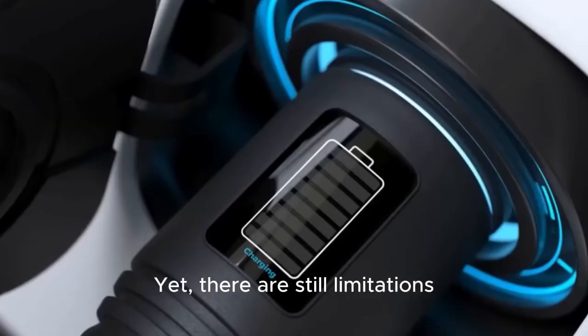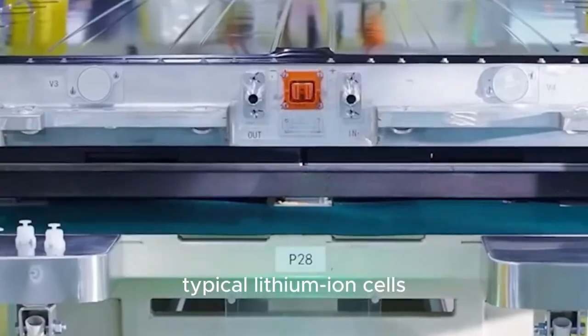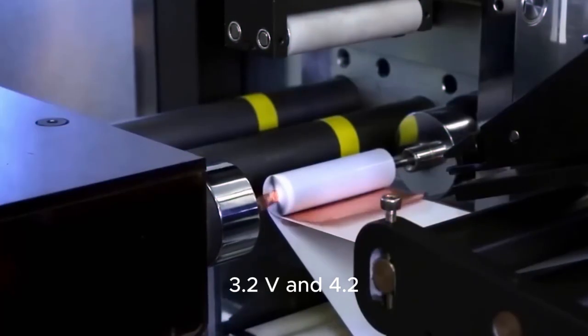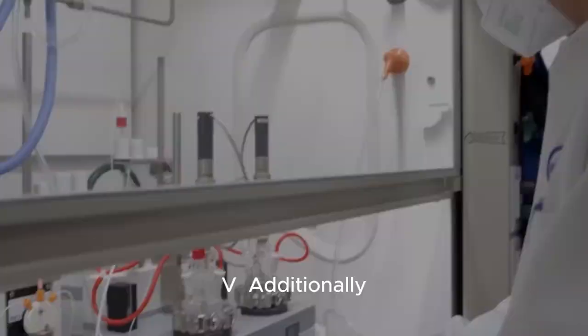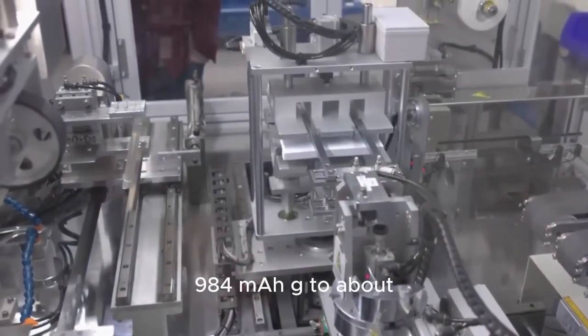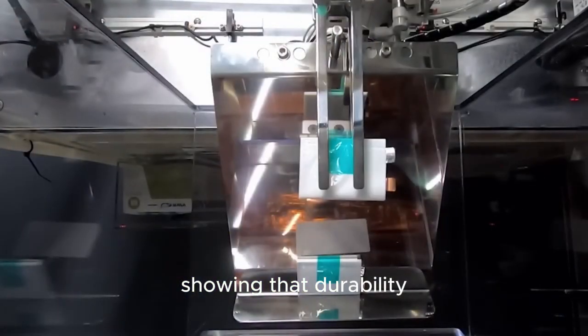Yet, there are still limitations. The voltage of 1.9V is lower than typical lithium-ion cells, which usually range between 3.2V and 4.2V. Additionally, the prototype's performance decreased from around 984 milliamp hours per gram to about 402 milliamp hours per gram after several cycles, showing that durability remains a major challenge.